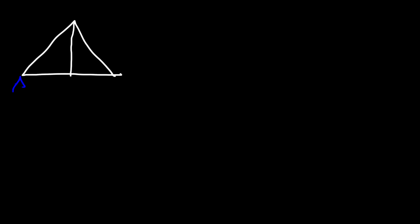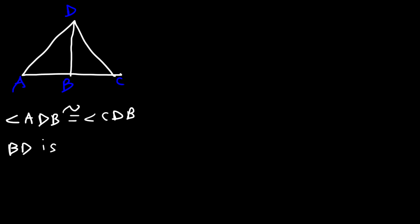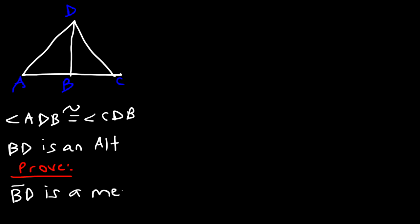Now let's work on another example. Once again, the points are A, B, C, and D. We're given that angle ADB is congruent to angle CDB, and also that BD is an altitude. The task is to prove that BD is a median.